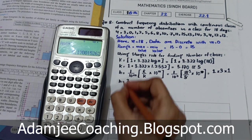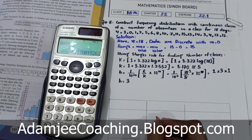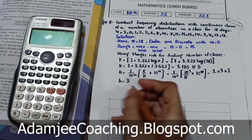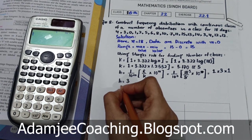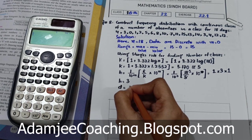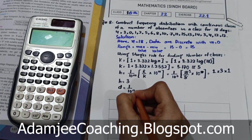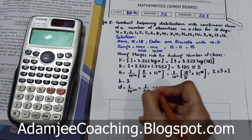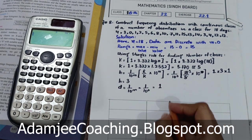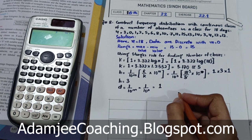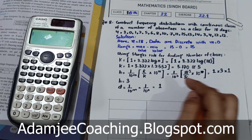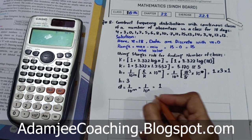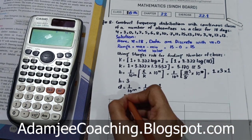Height ke baad distance between classes find out karte hain. D = 1/10^m = 1/10^0 = 1. Toh d aapke paas aa gaya 1. Ab pehli lower class boundary find out karni hai. Lower class boundary aayegi zero, kyunki sabse chhoti value zero hai. LCL = 0.